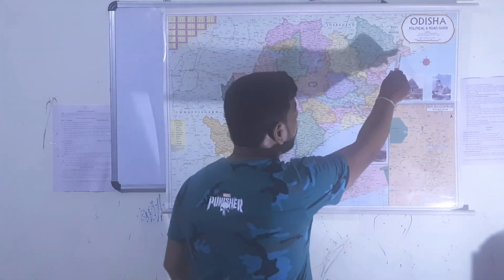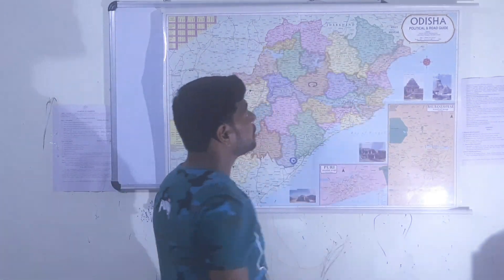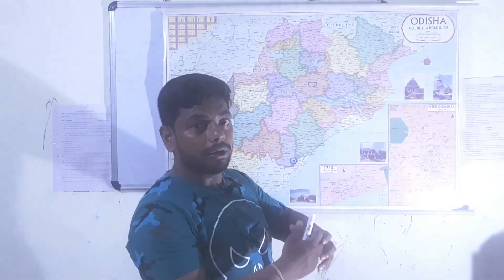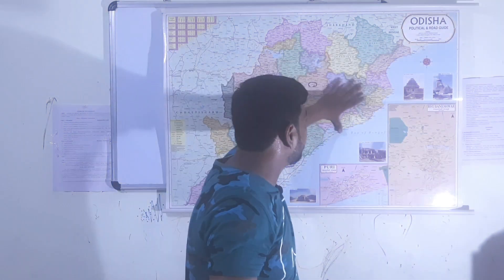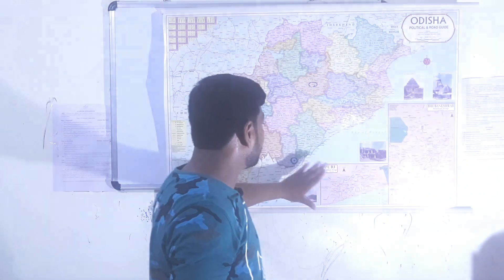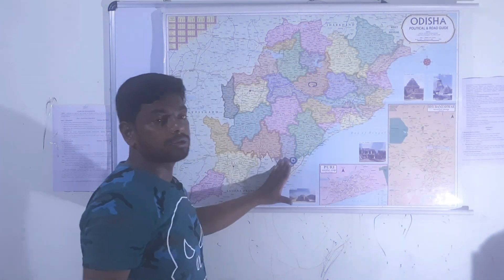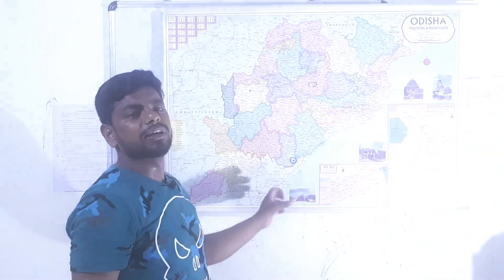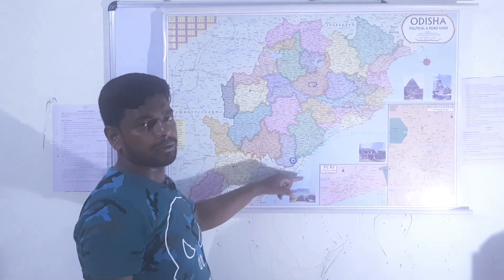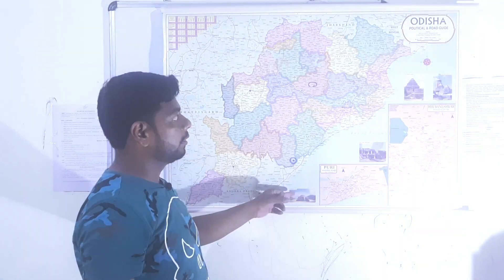The Northern Coastal Plain is the narrower one. The widest part is the Middle Coastal Plain. The Southern Coastal Plain, near the Rusikulia River, is the narrowest one. These distinctions are very important.